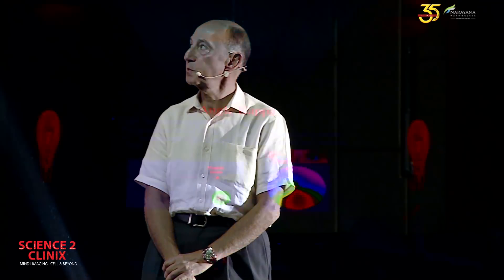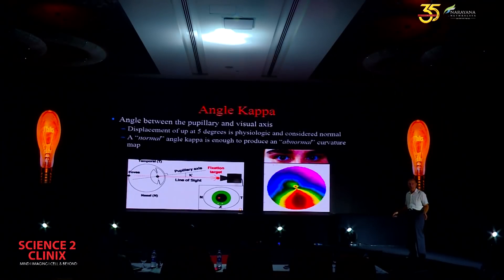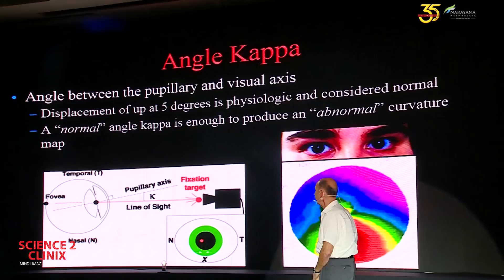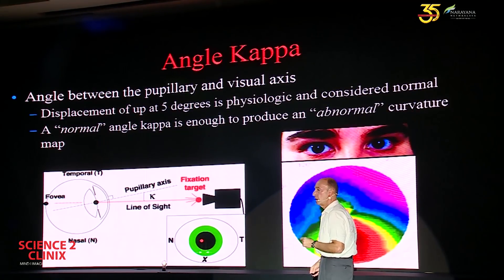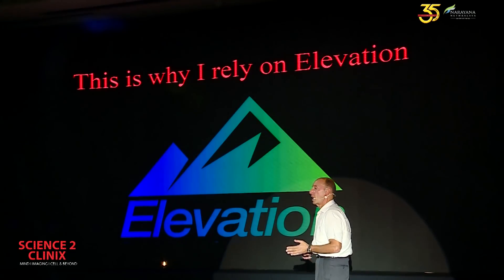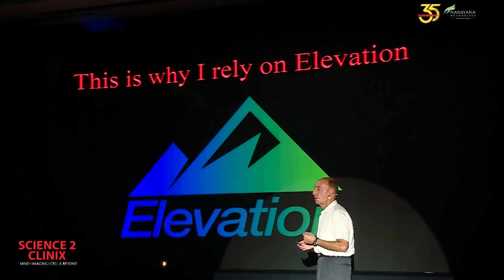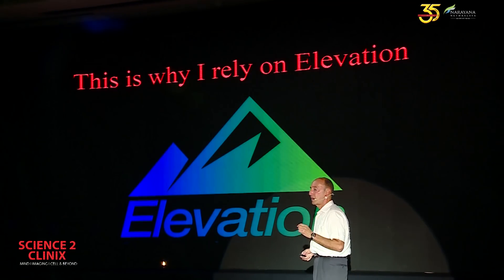The angle between the pupillary axis and the visual axis is angle kappa, and displacement up to five degrees is physiologic and normal. A normal angle kappa is enough to produce an abnormal curvature map. This is why I look at elevation, and for screening for refractive surgery, I rarely look at curvature maps.